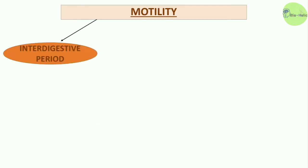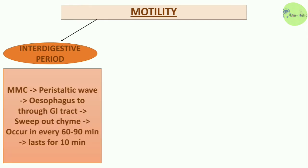Motility of the small intestine can be discussed in three parts. During the interdigestive period, we see migrating motor complexes (MMC) — a type of peristaltic wave that travels through the esophagus throughout the GI tract, sweeping out contents from the small intestine. This occurs every 60 to 90 minutes and lasts for about 10 minutes.